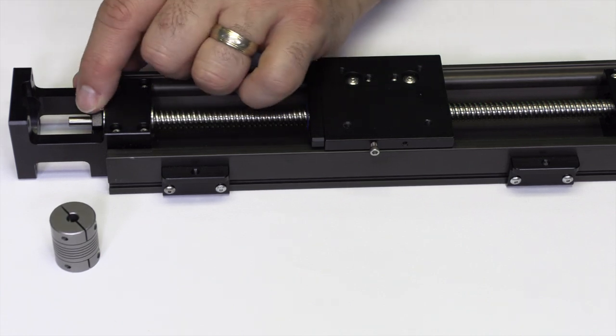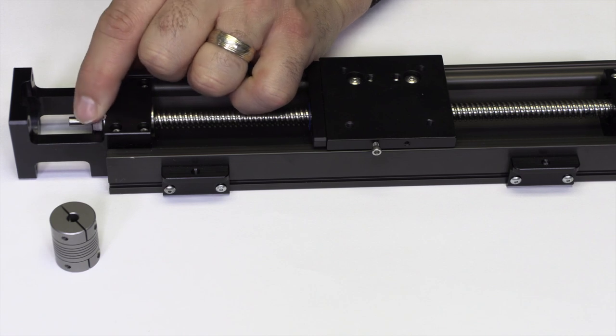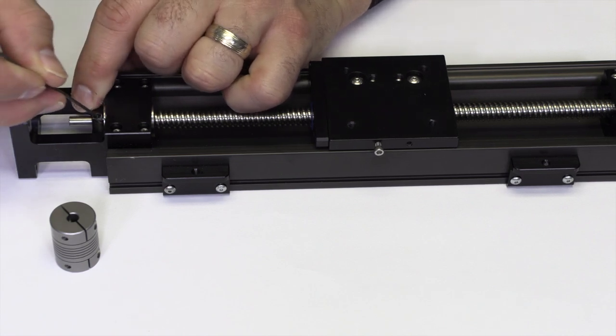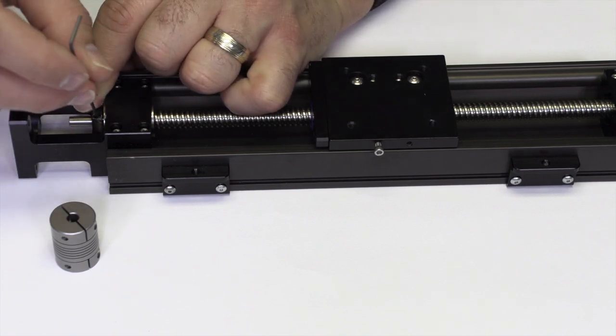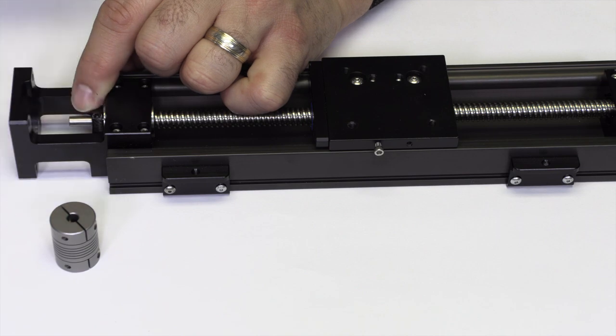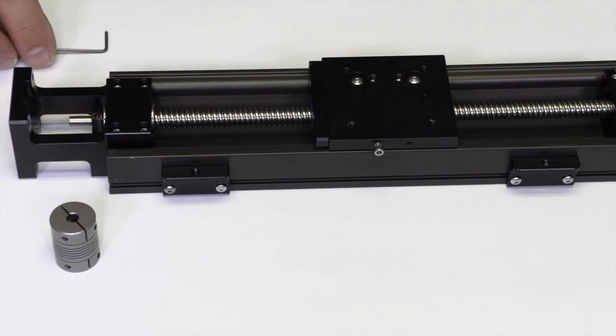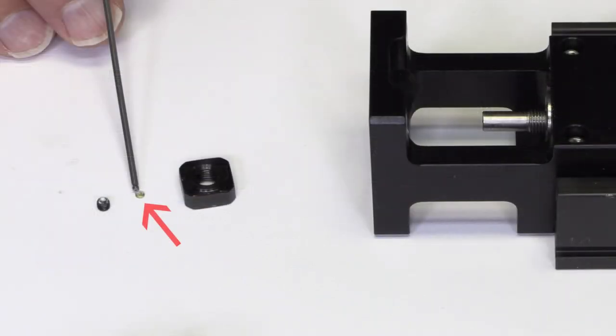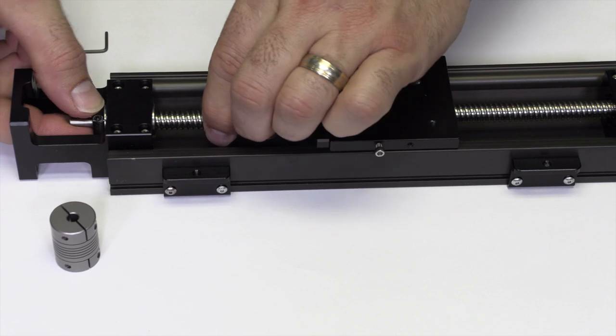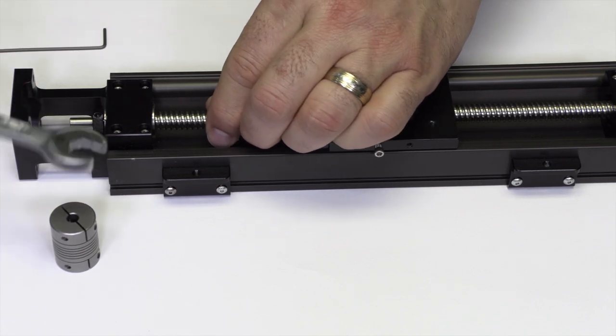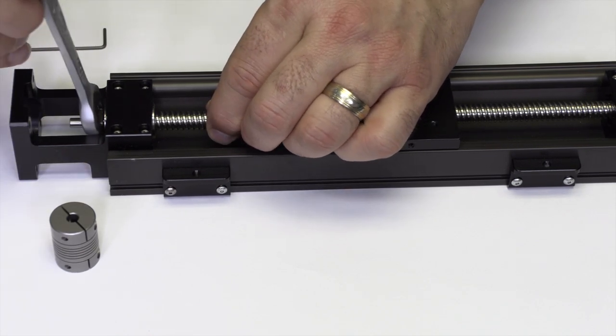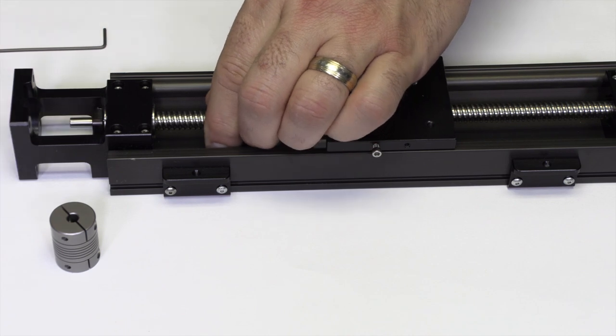Loosen the lock nut set screw with a 1.5mm Allen wrench. Don't take the set screw out, just loosen it. Here is the tricky part. There is a very small brass crush washer under the set screw on each lock nut. You can see how tiny it is. Make sure you have the slide on a clean surface so you don't lose the brass washer. I put white paper under the slide so I could see the brass washer. This brass washer keeps the set screw from damaging the slide screw.